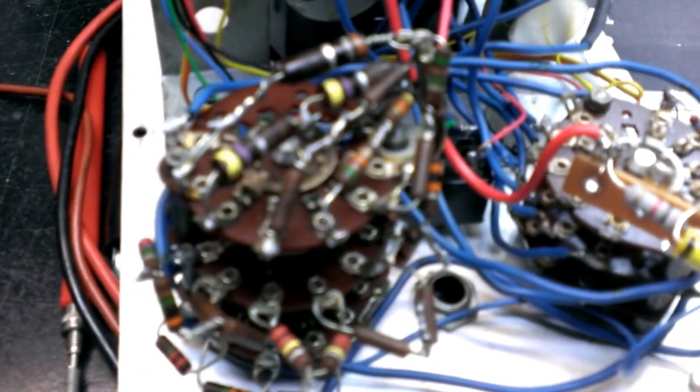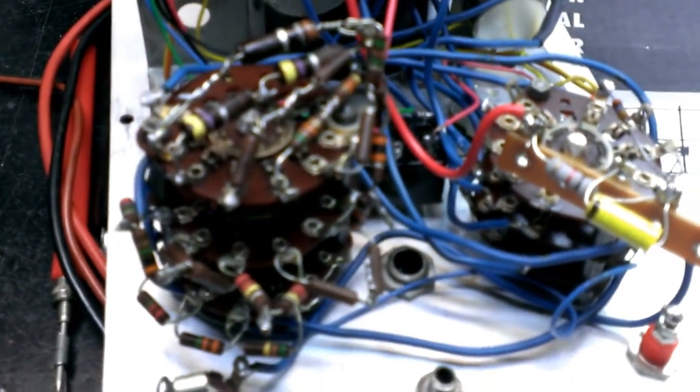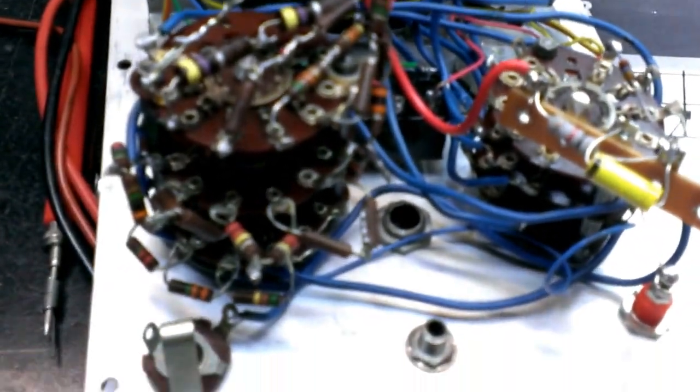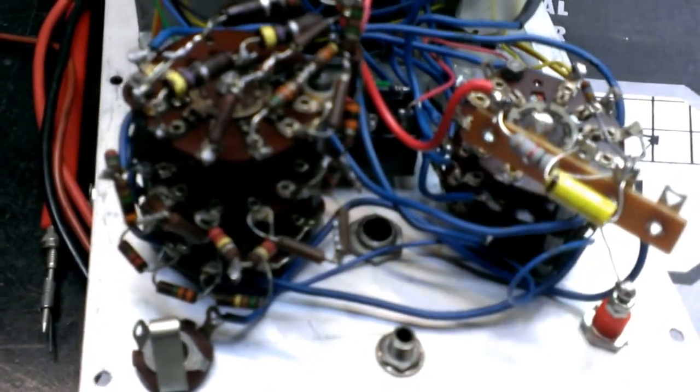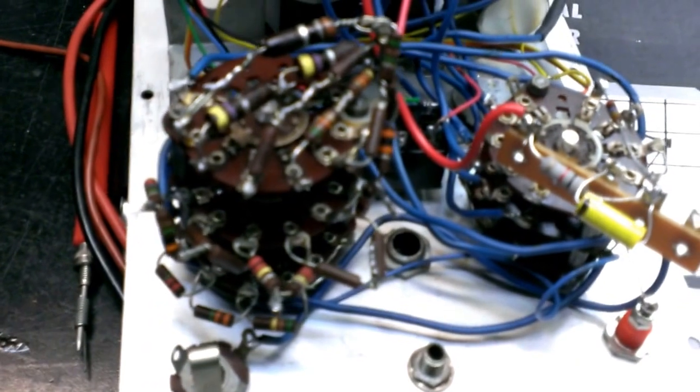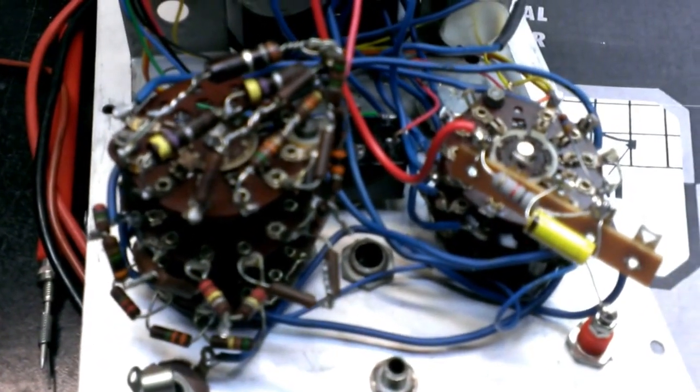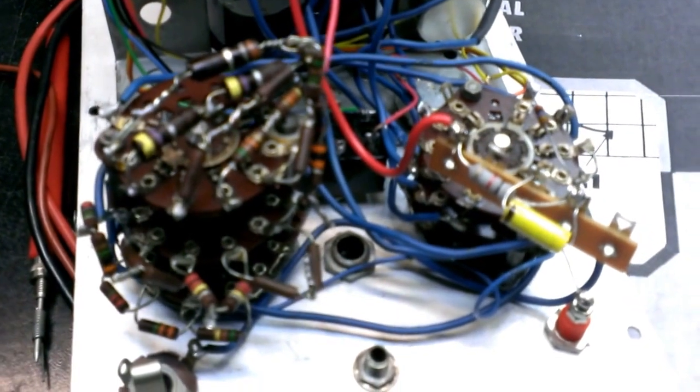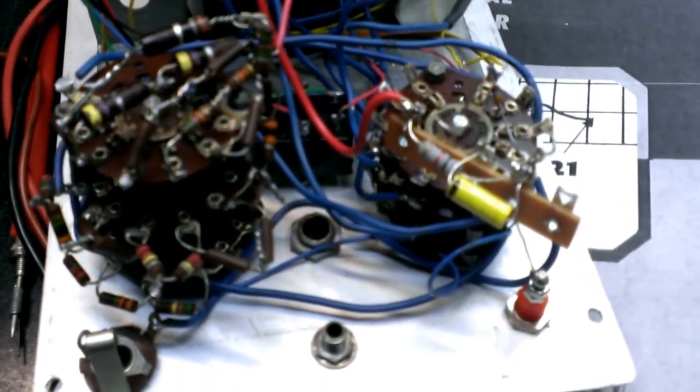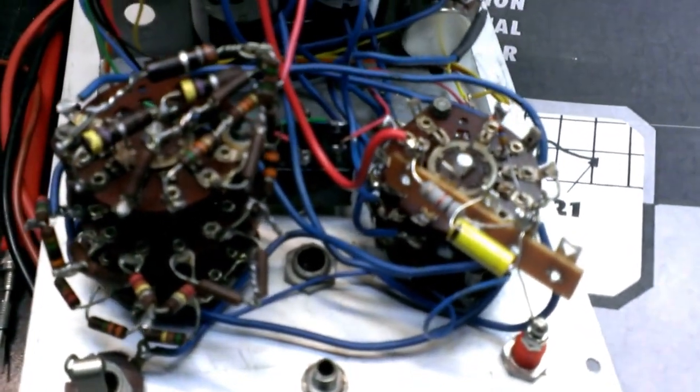They're all original to the build. Obviously, the one that you see over here is part of the new board that I put in. But all the resistors stayed the same. I checked them, and they were within their 10% tolerance or 5% tolerance in the circuit. So to me, there was no reason to change them at this point.